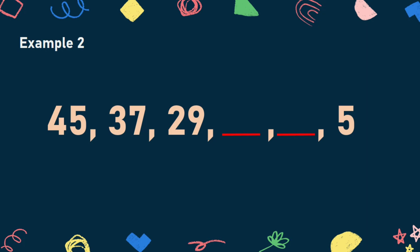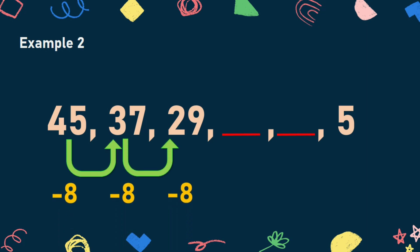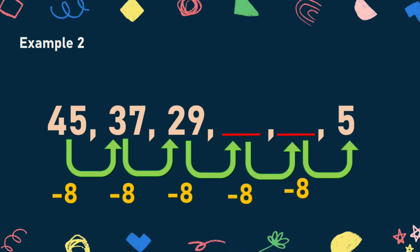Here is another example of a number sequence. The sequence of numbers is in decreasing order. Let us get the difference between 45 and 37, and likewise between 37 and 29 — the difference is 8. Therefore, we should subtract 8 from the remaining numbers. The missing terms are 21 and 13, since 13 is 8 more than the last term, which is 5.